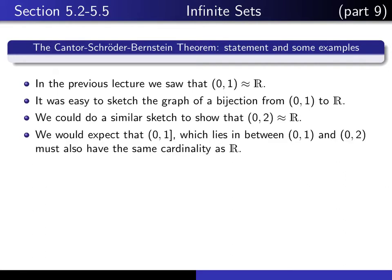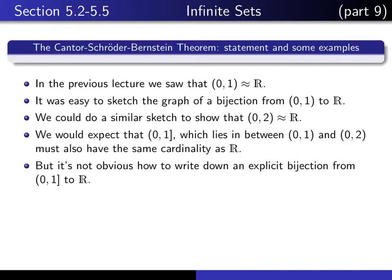But if you take a set which lies somewhere in between those two sets, namely the left-open and right-closed interval (0,1], intuitively it seems clear that it also must have the same cardinality as R. But it turns out it's not so easy to write down an explicit bijection that would map this set into R.